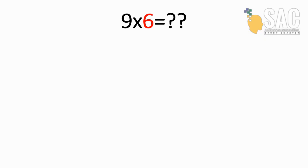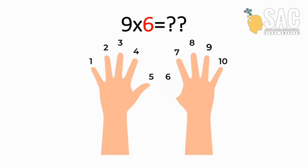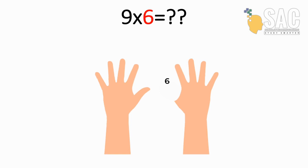Let's have a go with 9 times by 6. Bring both hands out like this. Then we have number 1 to 10 from left to right like this. Since we are multiplying 9 by 6, we fold our 6th finger like this.